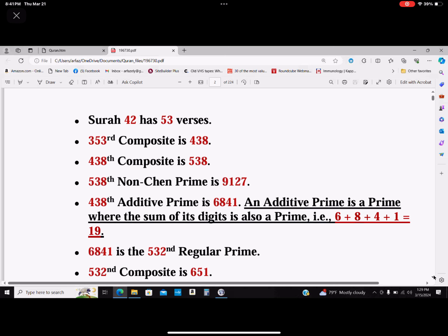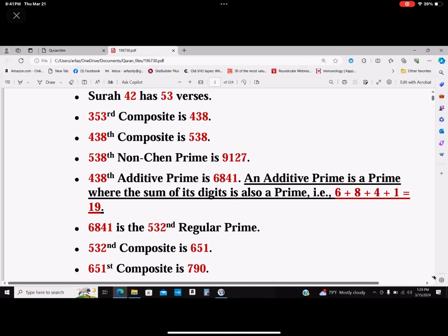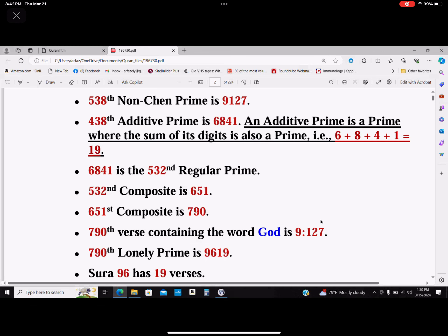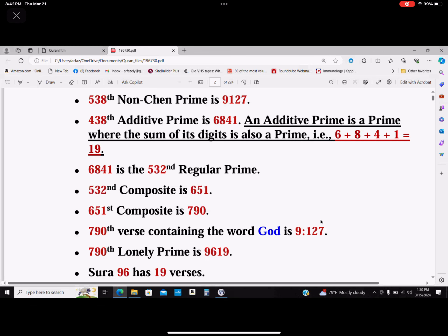6841 is the 532nd regular prime. The 532nd composite is 651. The 651st composite is 790. The 790th verse containing the word God is 9:127. The 790th lonely prime is 9619, and chapter 96 has 19 verses.